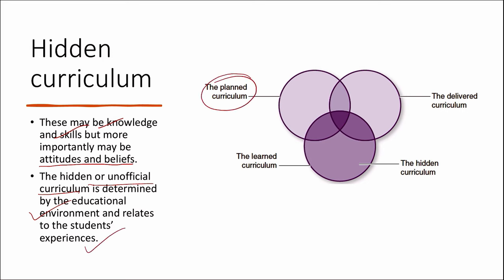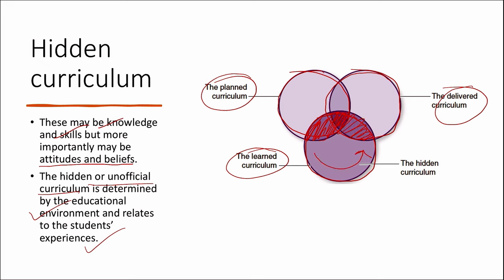If the planned curriculum is one thing, the delivered curriculum in institutions will be different, and the learned curriculum of the students will be yet another. The hidden curriculum is what the student acquires from school informally or unofficially — and most of the learning by students is through this hidden curriculum.